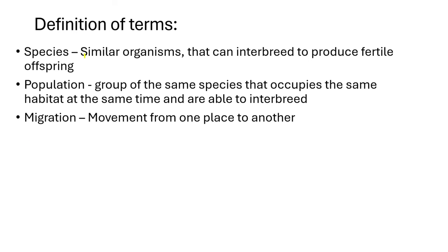You need to know that species are similar organisms, and those similar organisms must be able to interbreed so that they can produce fertile offspring. When we say that similar organisms are able to interbreed, it means they are able to have offspring together. That offspring must be fertile. So species are similar organisms that can interbreed to produce fertile offspring. This definition could be worth three marks, so you need to know how to define it.